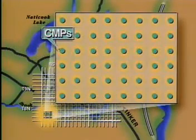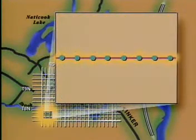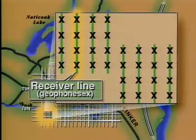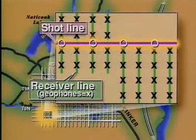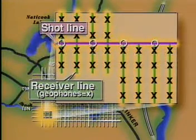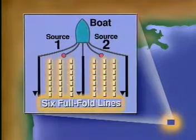A 3D survey is an aerial collection of data resulting in common midpoints, or CMPs, at regular intervals over the survey area, rather than focused along a two-dimensional line. In acquiring land 3D data, the geophone array and shots do not necessarily fall in the same line. In fact, the shot line may be perpendicular to the geophones, and there are usually multiple lines of geophones active at the same time. In marine 3D surveys, multiple sources, streamers and boats, are used to acquire several seismic lines simultaneously.